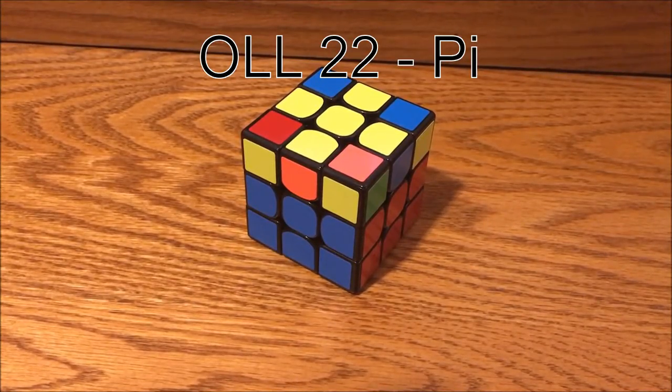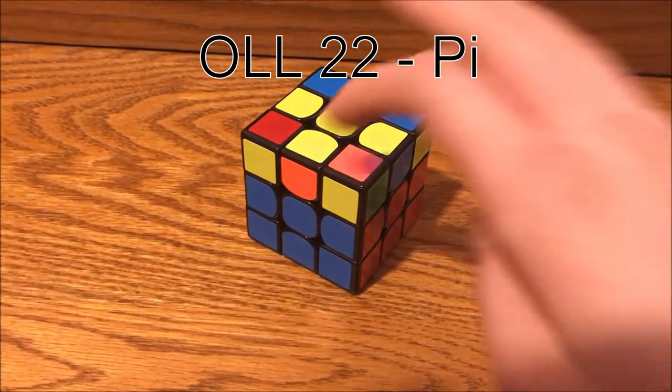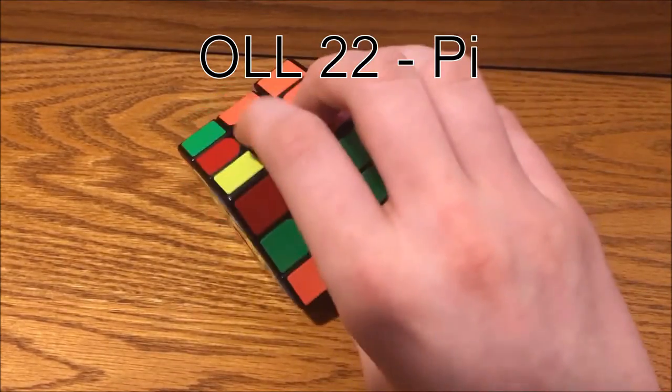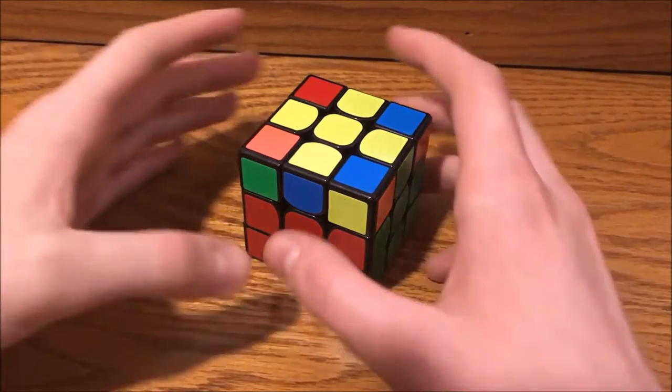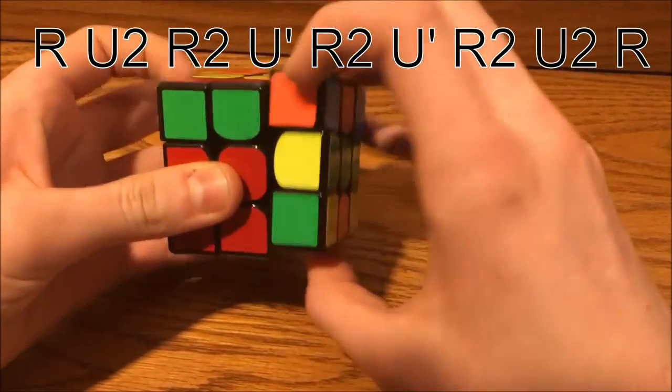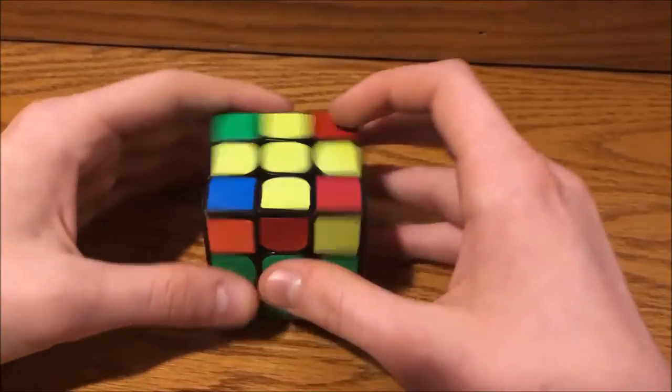So the second zero corners up case has these two headlights right here, but there are no two headlights on the other side. Instead, they're on opposite sides, as you can see here. To solve this case, you do this algorithm. And here it is fast.